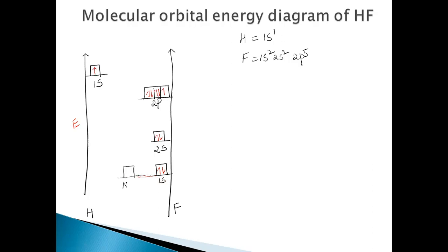The 2S orbital also does not participate in bonding because its energy level does not match with the 1S orbital of the hydrogen atom. So the linear combination between 1S of hydrogen and 2S of fluorine is not possible, and 2S also remains as a non-bonding electron. So 1S2 and 2S2 of fluorine both remain as non-bonding.